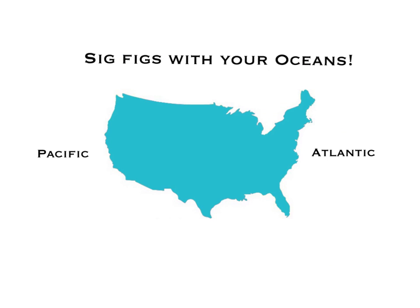I hope this tutorial helped you out. Remember, if you use the oceans to determine the number of sig figs, all you have to do is ask yourself: is the decimal absent, or is it present? That tells you which side to start on, then count every digit after your first non-zero.